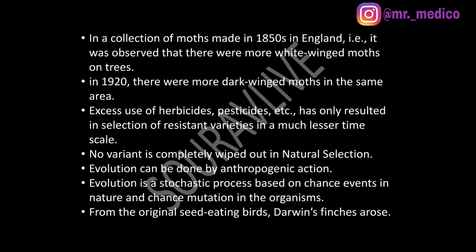Evolution can be done by anthropogenic action — man-made evolution is possible. Evolution is a stochastic process based on chance events in nature and chance mutations in the organism. Three key words: stochastic process, chance event in nature, and chance mutation in the organism.